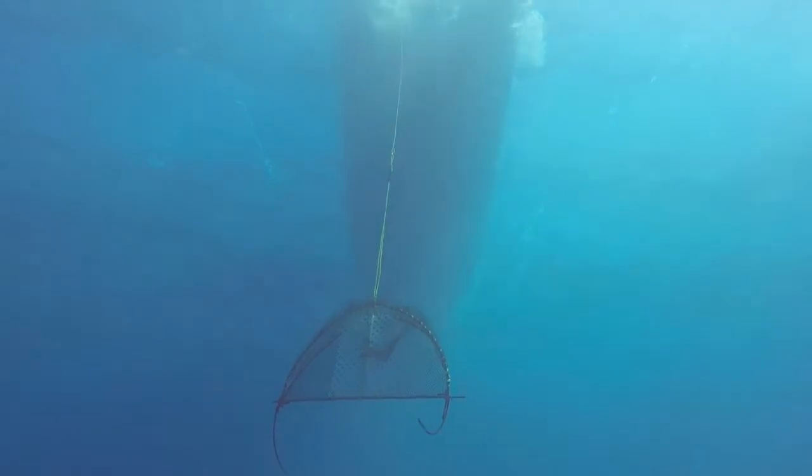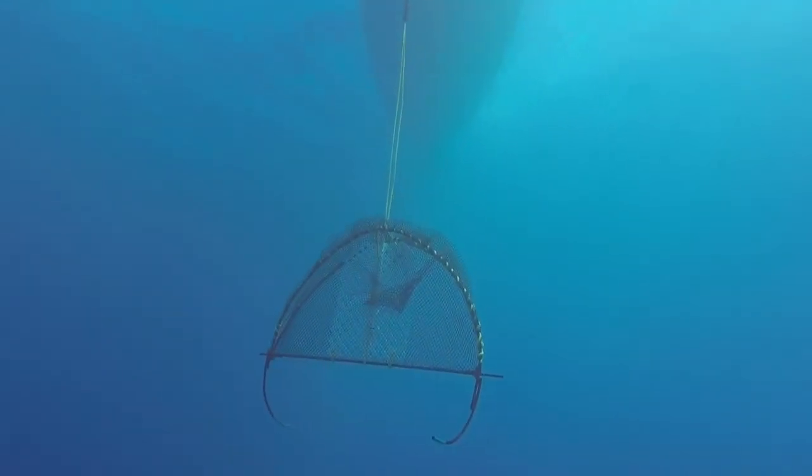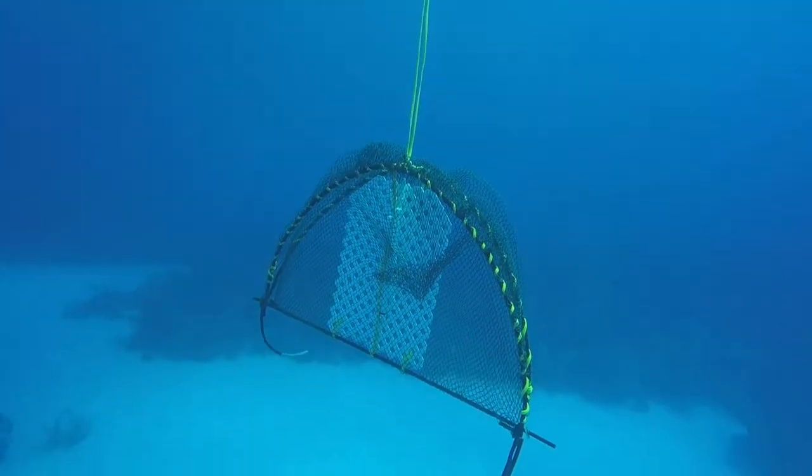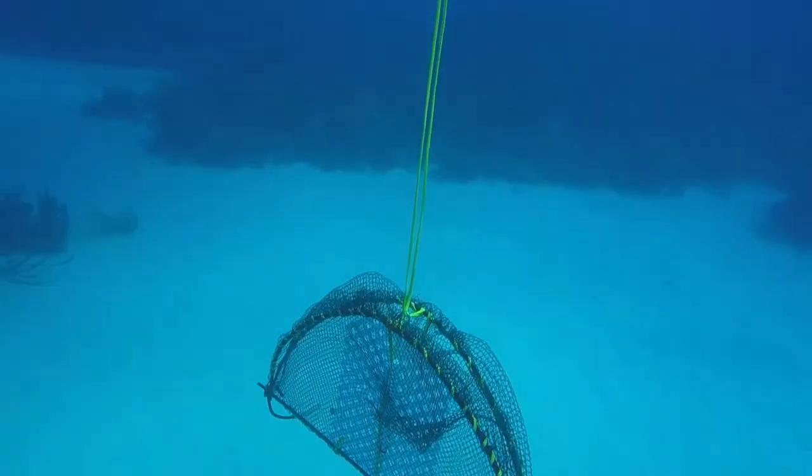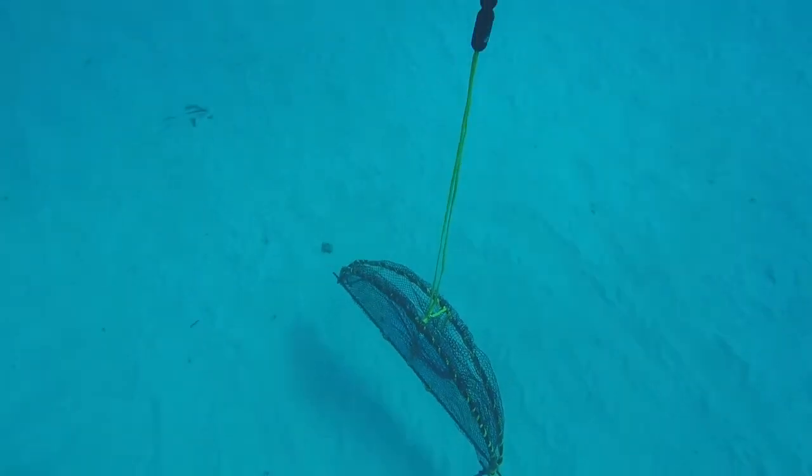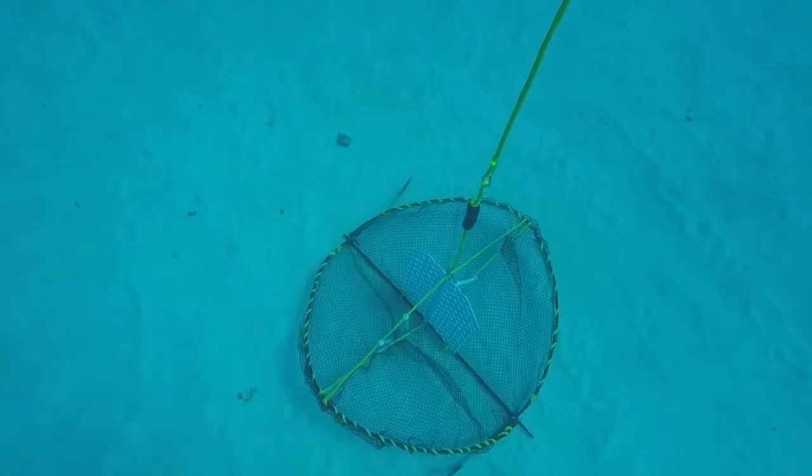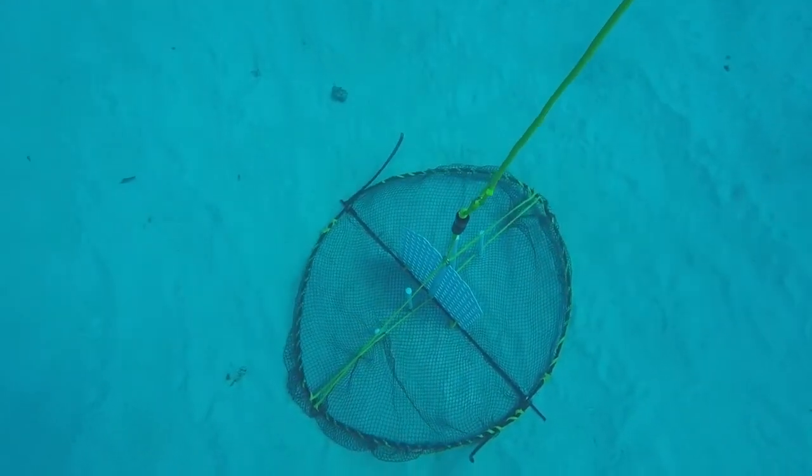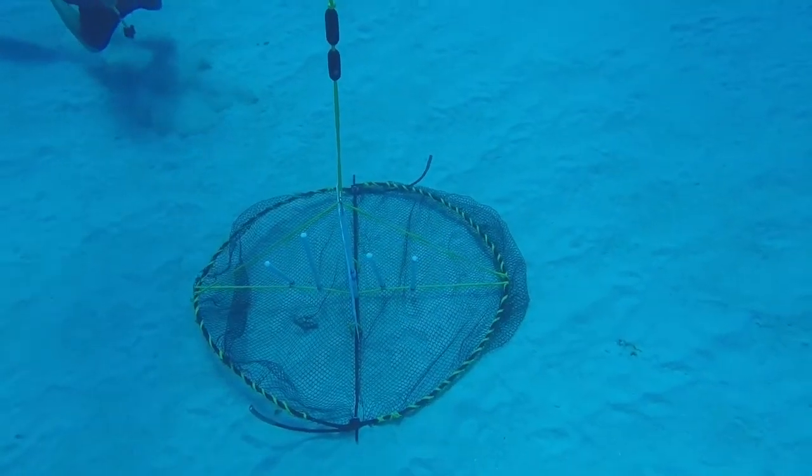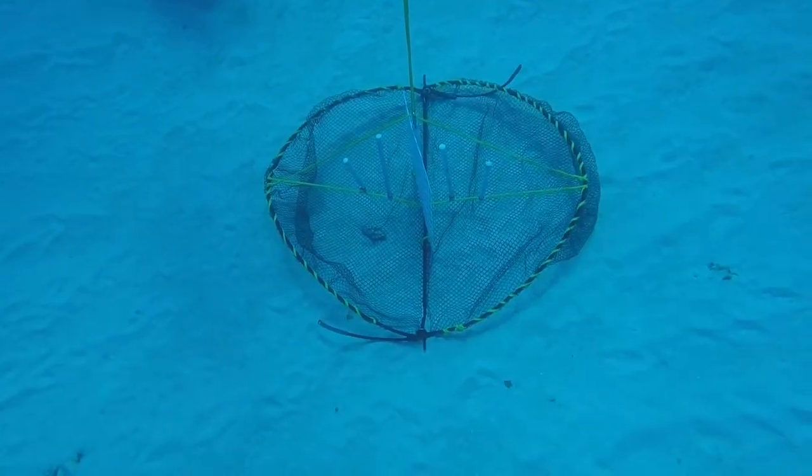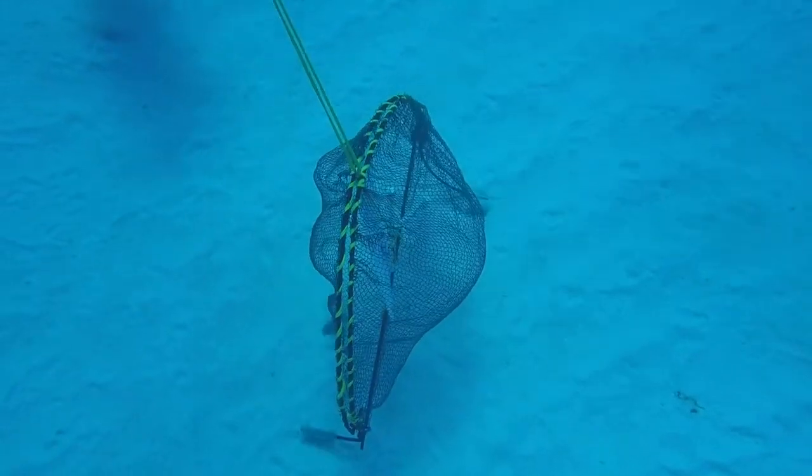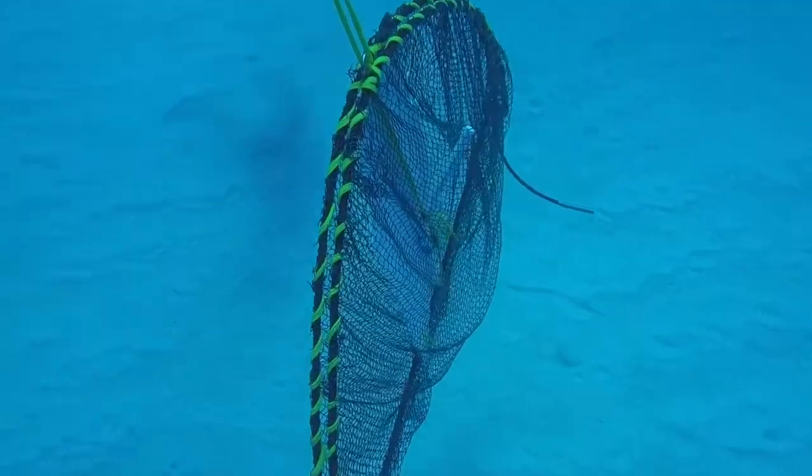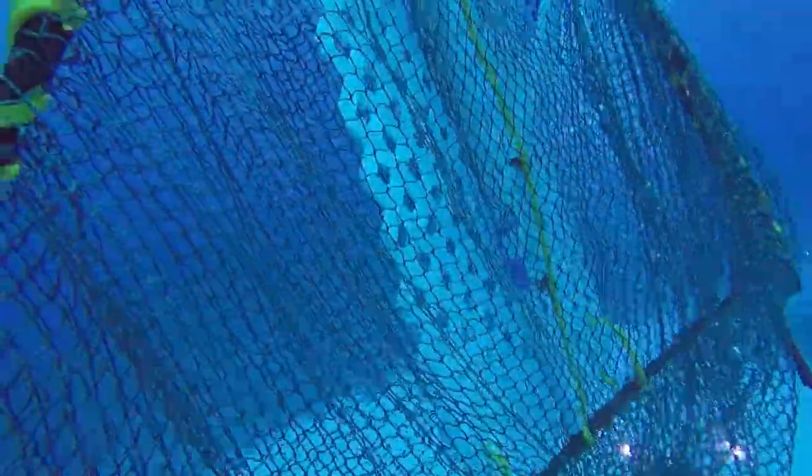This video sequence shows a slightly older version of the trap in the field being tested, being dropped off a boat, descending at about a meter per second, hitting the bottom, and opening on the bottom. You can see how the deflectors force the jaws apart so that the net splays across the bottom. And finally, watch how the net billows because it's loosely attached to the frame, and how the harness draws the jaws tightly closed through the stainless steel loop and keeps them closed during ascent.